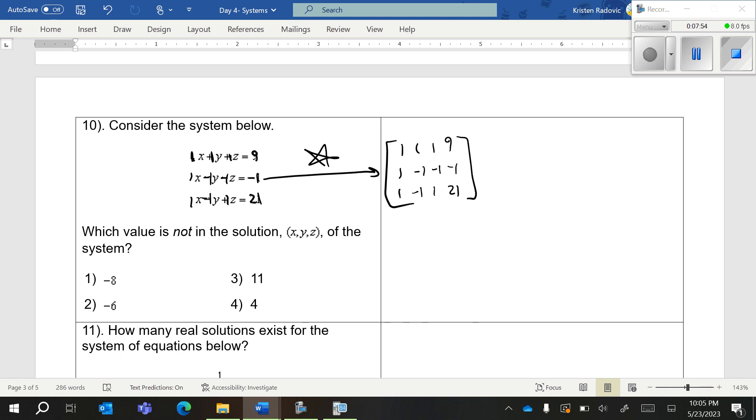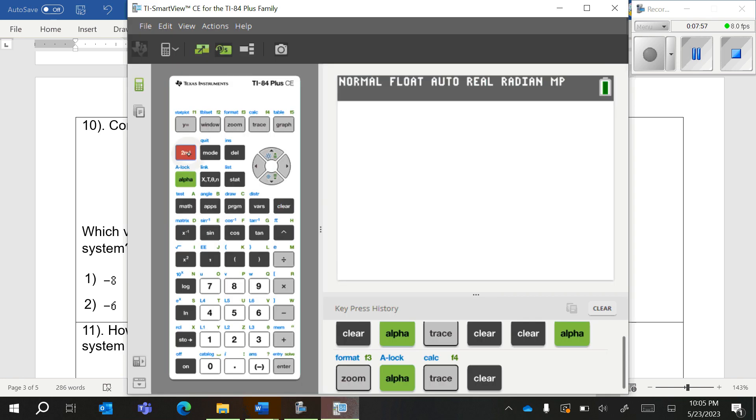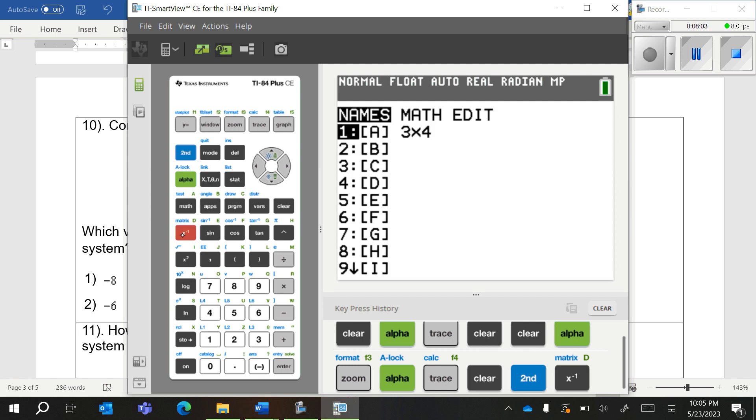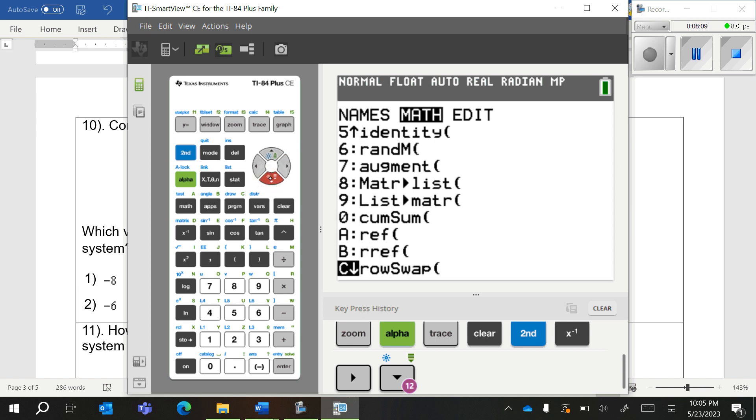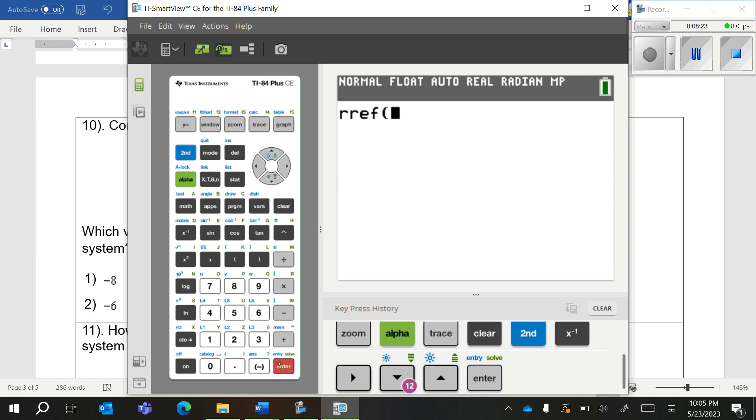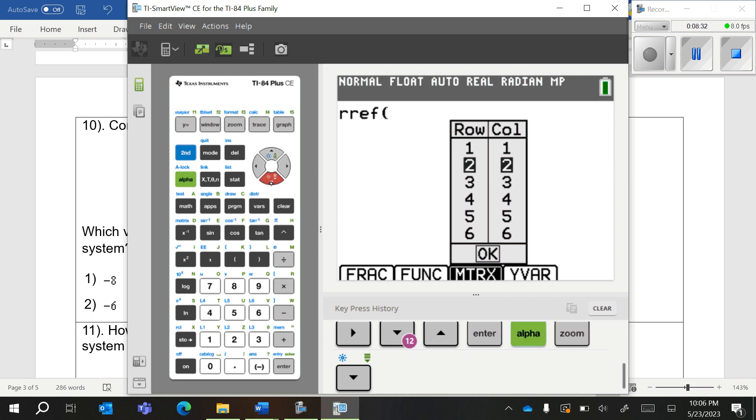In your calculators, you're going to hit second x to the negative one. That's right under the math button, where it says matrix. You're going to scroll over to math and you're going to scroll down until you see rref. rref stands for, I think it stands for reduced row echelon form. Don't really worry about it. That's the fancy talk of saying solve the three variable system for us. Now you need to put a matrix in here. You're going to hit alpha zoom.